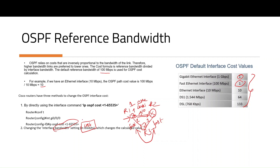The second method is to change the interface bandwidth. Using the formula — reference bandwidth divided by the actual interface bandwidth — you can influence the cost. By changing the interface bandwidth, you change the traffic to the actual path and other paths.